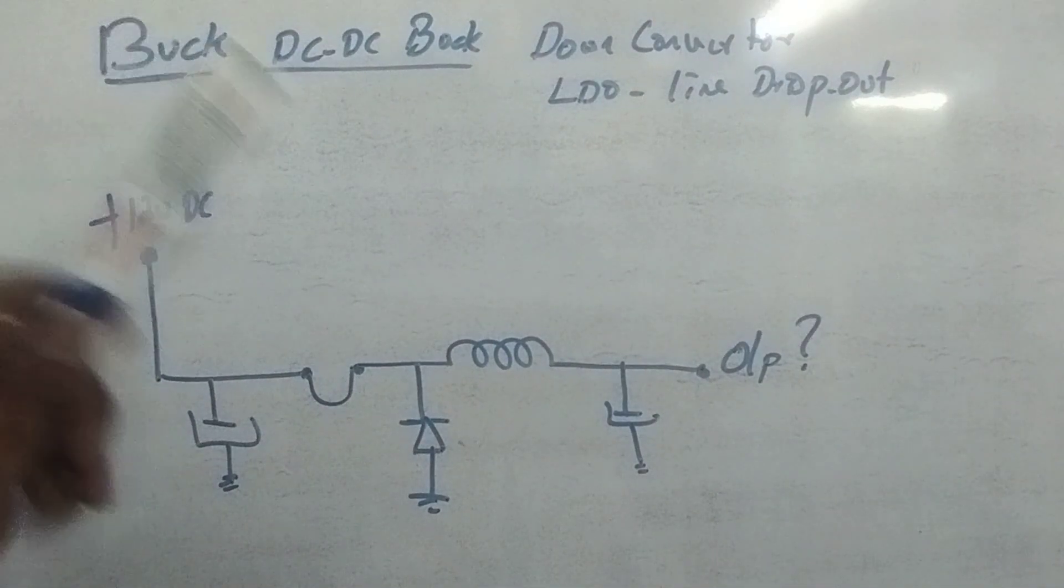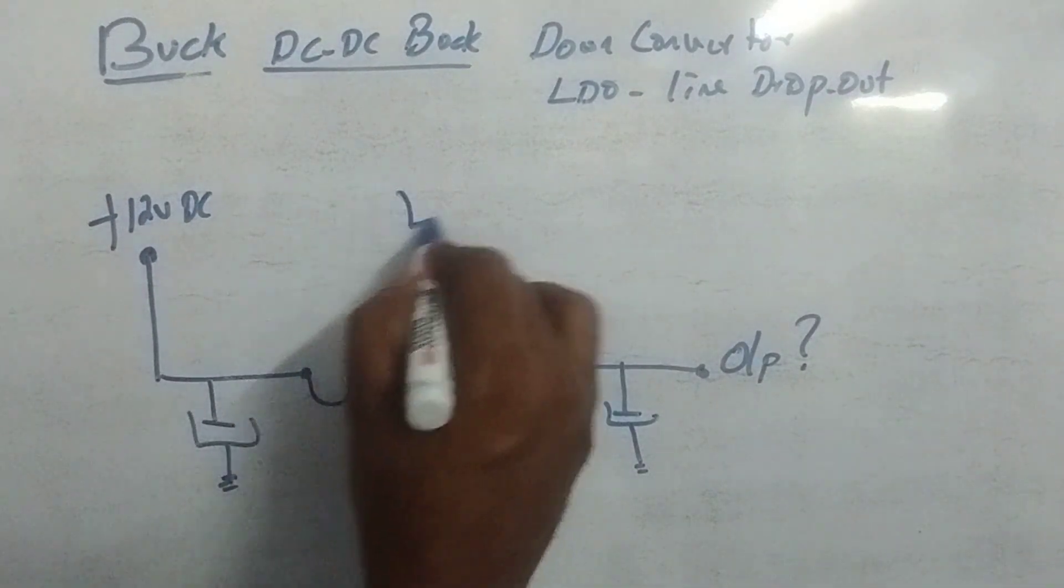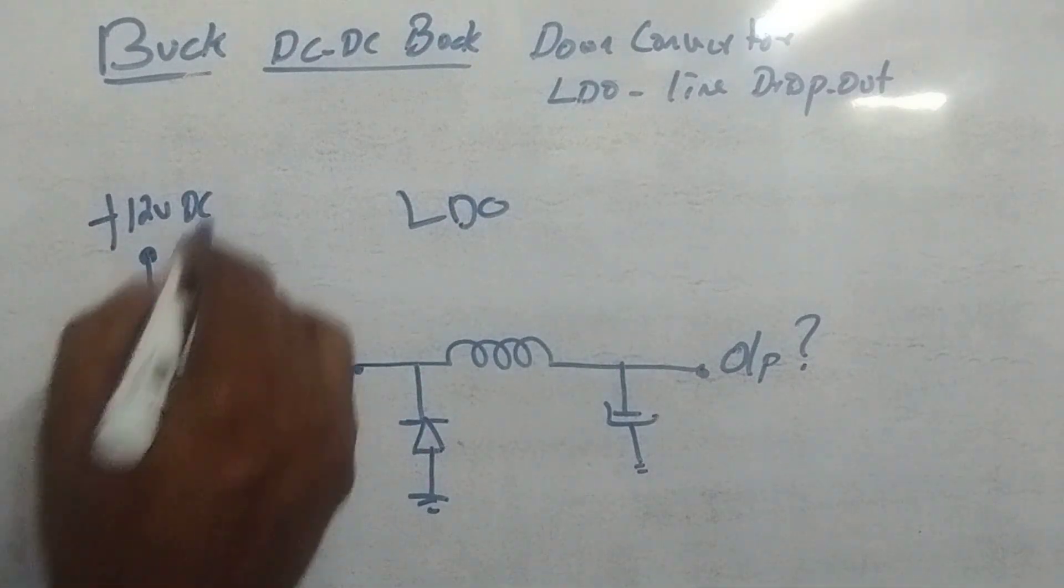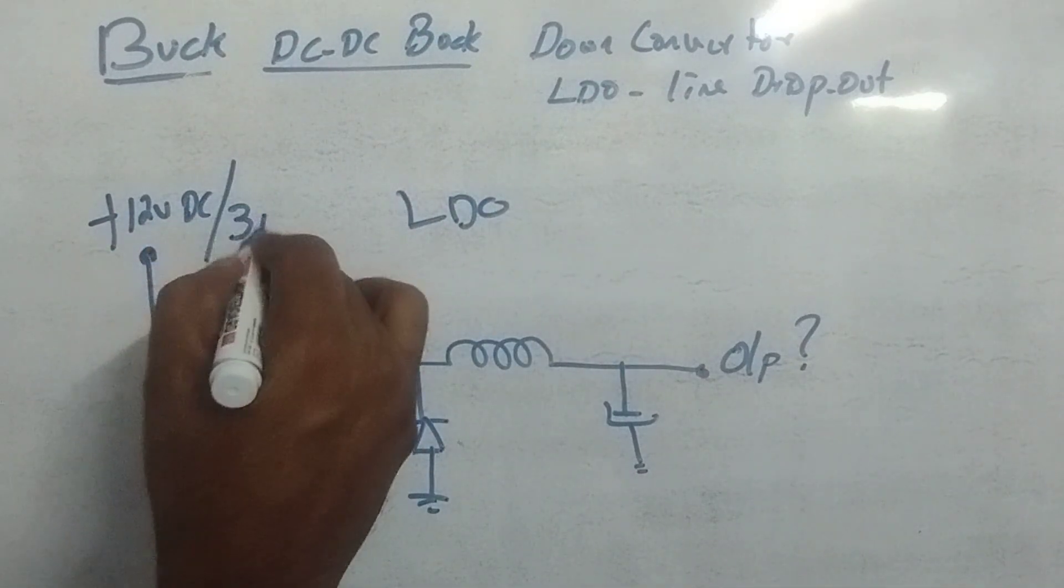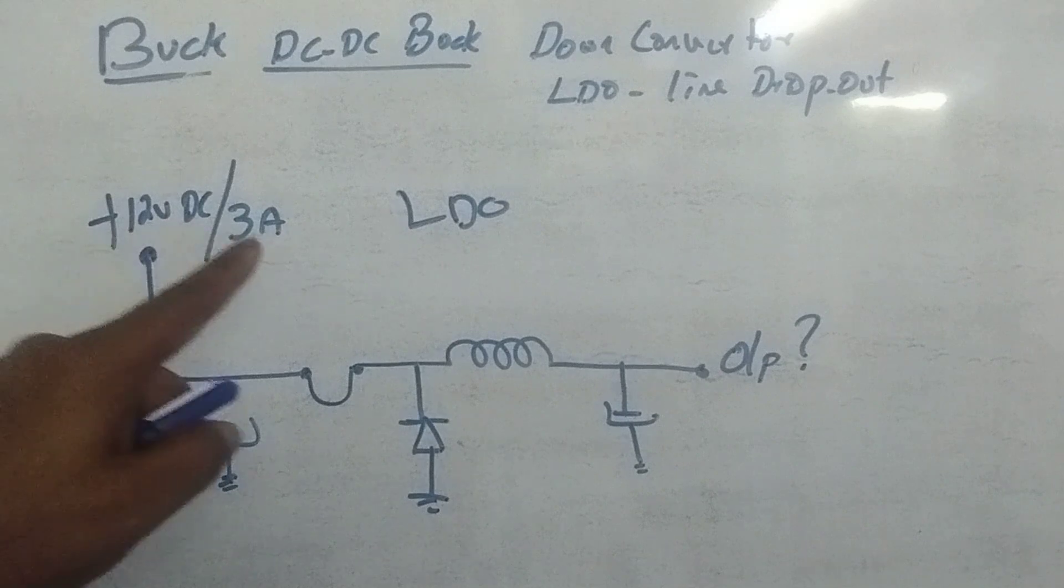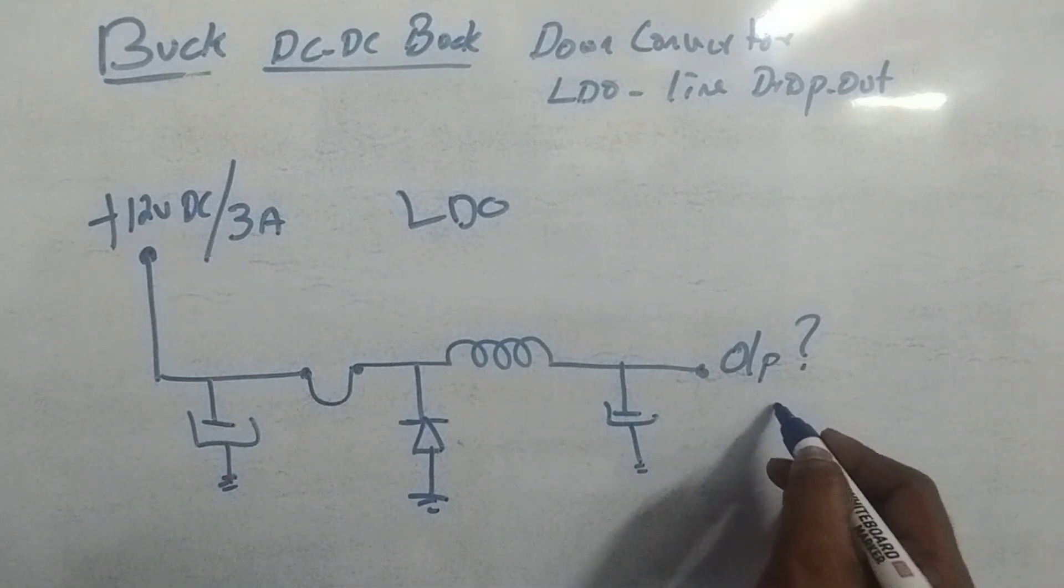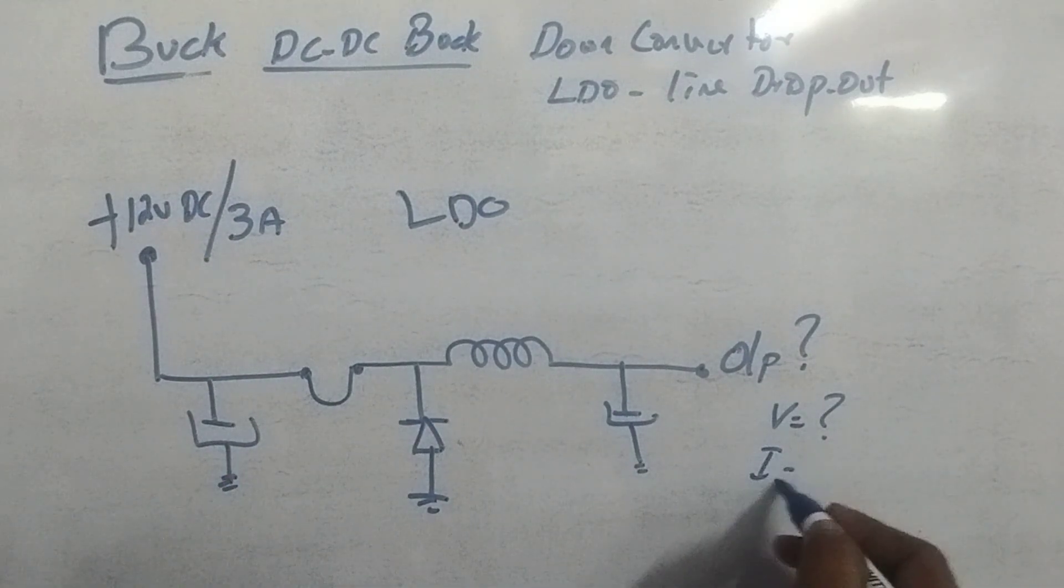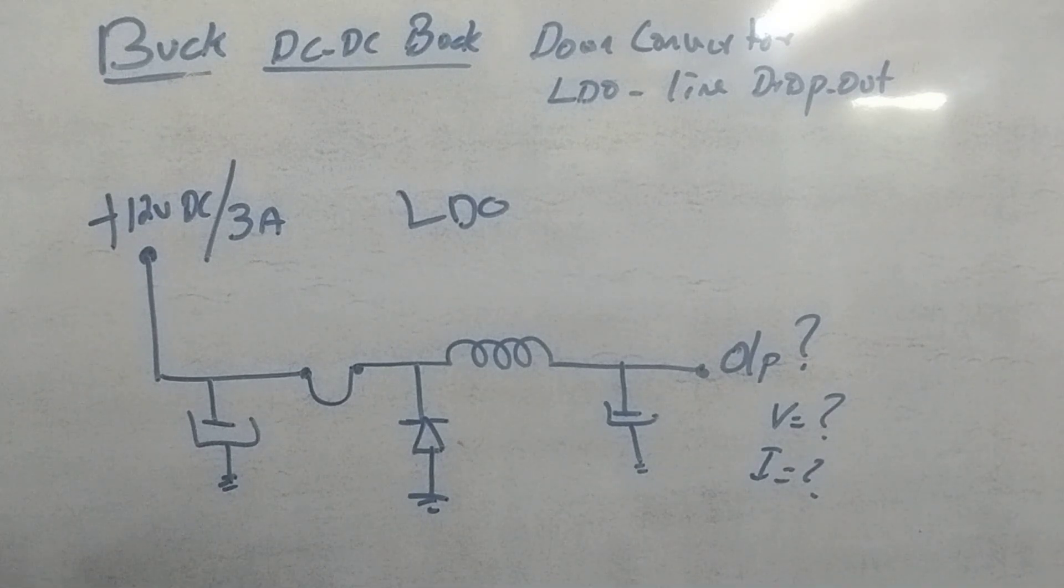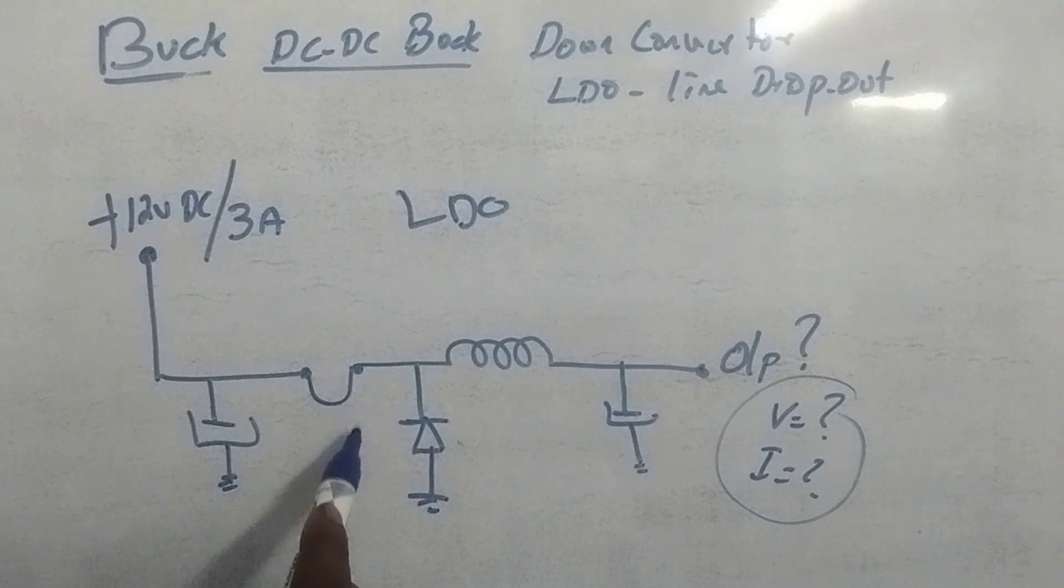Friends, this is the LDO function. This is 3A current - 12V is 3A current. So the output is how much voltage and how much current. That is the purpose we are using this LDO.